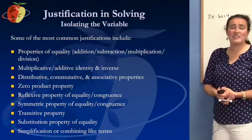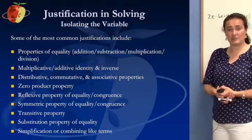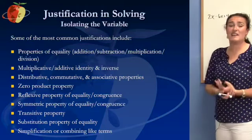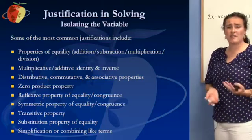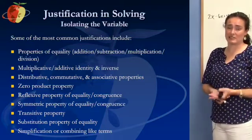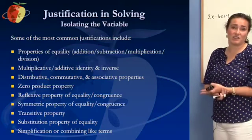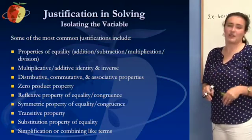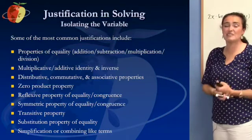The transitive property. That's where if a equals b and b equals c, then a equals c. You could think of it in terms of money. If I'm saying 100 pennies is equal to 10 dimes and 10 dimes is a dollar, then I could skip the dimes part and just say 100 pennies equals a dollar. That's the transitive property.